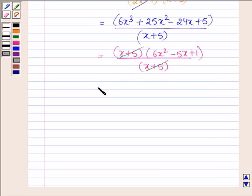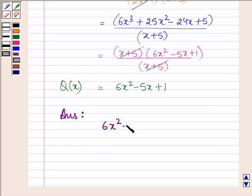Now, on cancelling (x + 5) with (x + 5), we have 6x² - 5x + 1, and this is the polynomial Q(x). Hence our answer is Q(x) = 6x² - 5x + 1. This completes the session. Bye and take care.